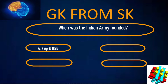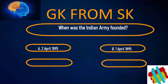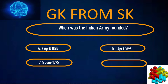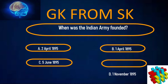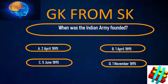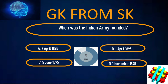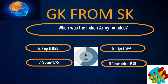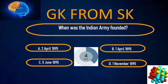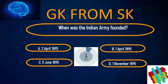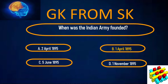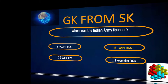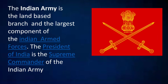When was the Indian Army founded? A. 2nd April 1895, B. 1st April 1895, C. 5th June 1895, D. 1st November 1895. Your time starts now. The Indian Army is the land-based branch and the largest component of the Indian Armed Forces. The President of India is the Supreme Commander of the Indian Army.